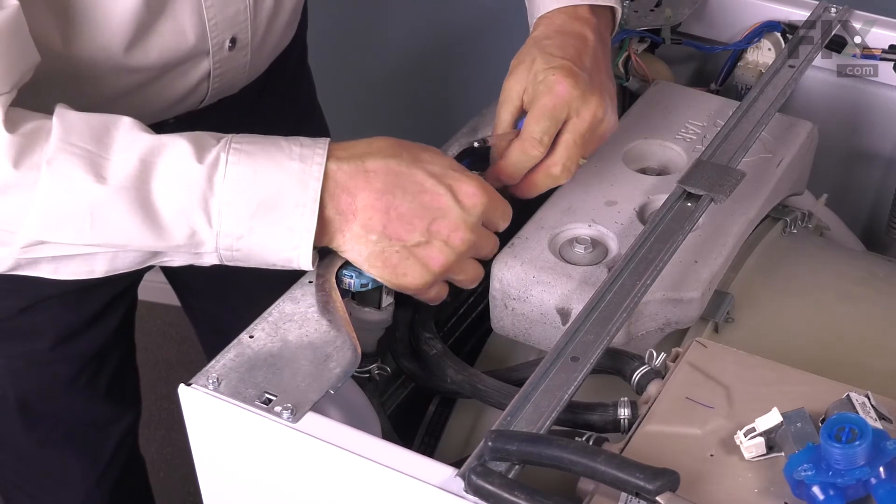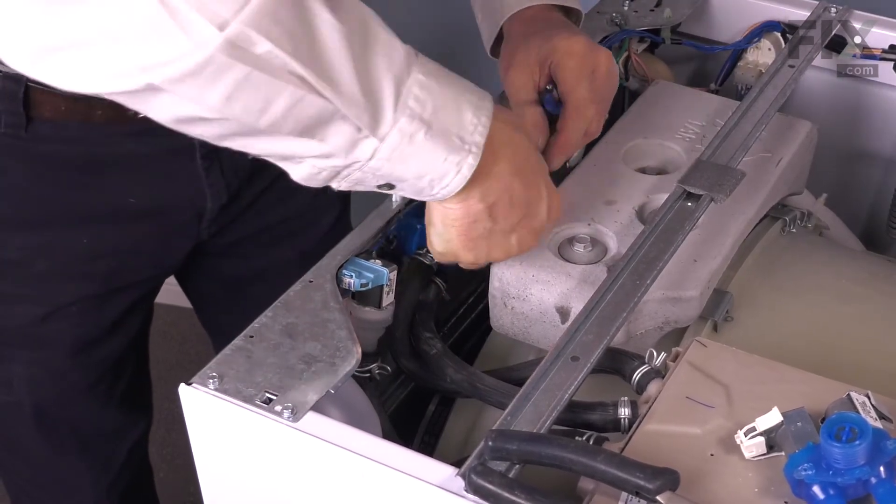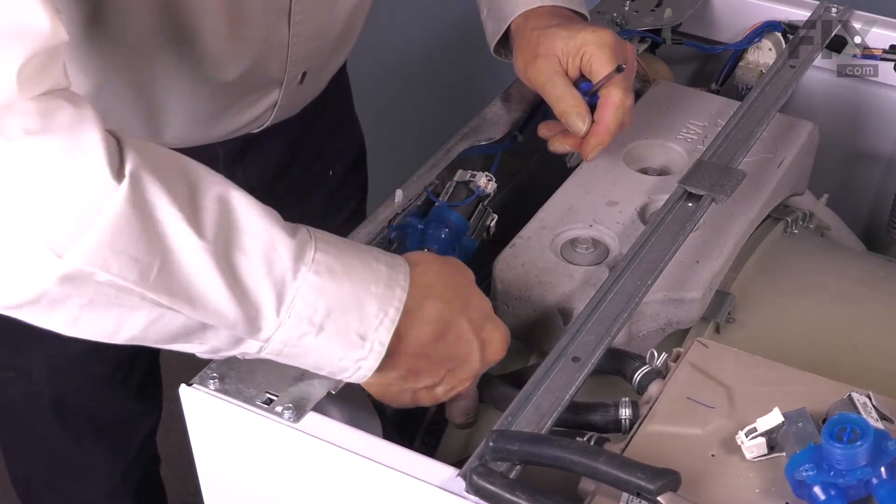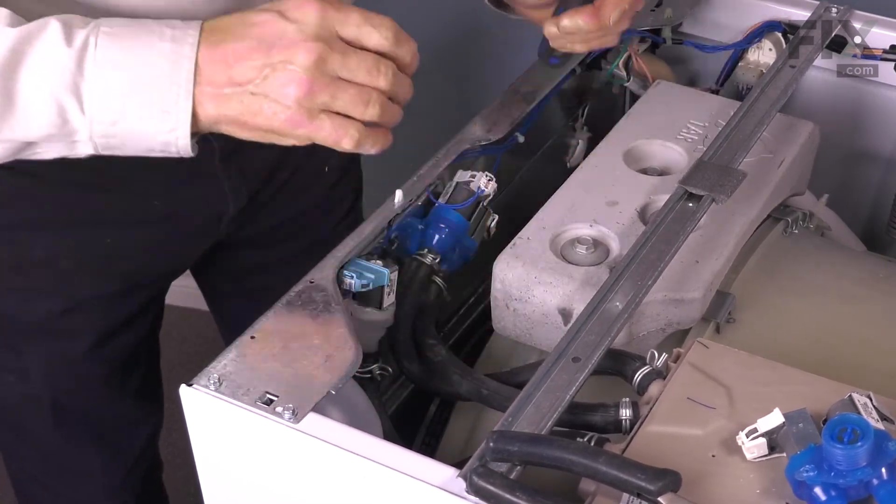Reconnect the wire harness to that top coil. Again, make sure the locking tab engages, make sure there are no kinks in the outlet hoses.